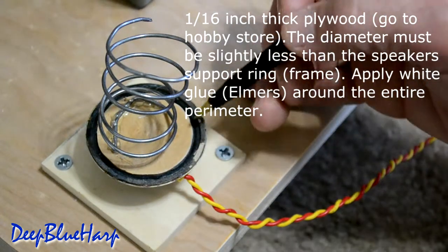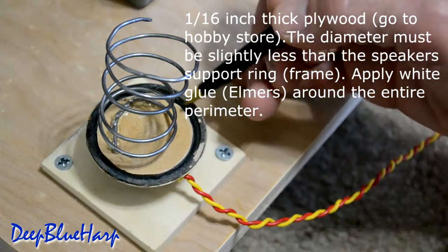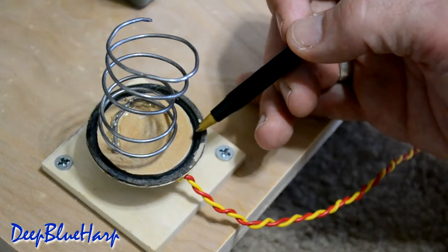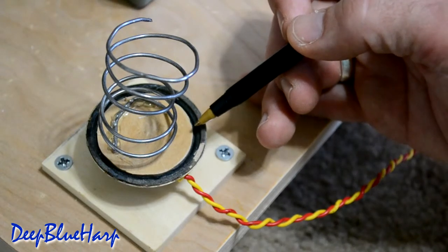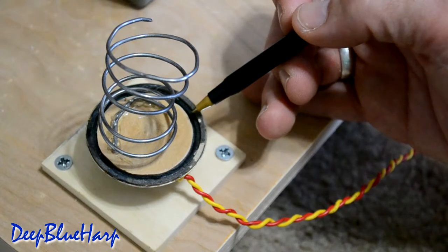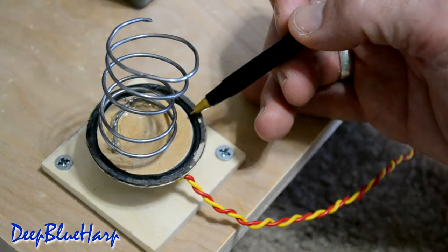Just inside the speaker cone, I used white glue, not epoxy or hot glue. It needs to be white glue because you don't want to interfere with the dynamics and structure of the paper cone.